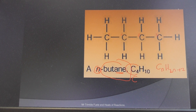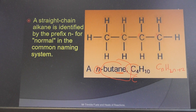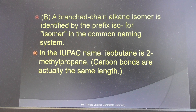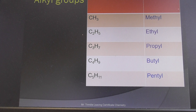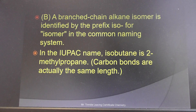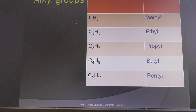Now looking at structural isomers: an isomer — 'iso' meaning the same — refers to molecules that have the same molecular formula but different structural formulas. The structure is different even though the parts are the same, and that's what we're going to look at in this video.